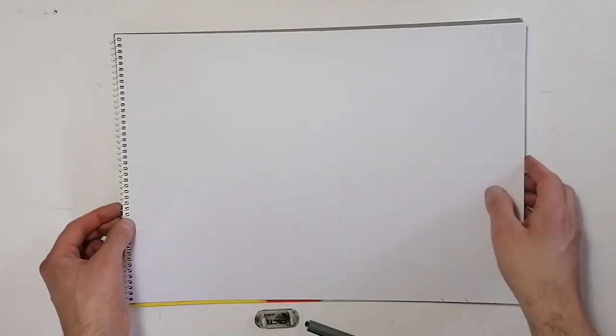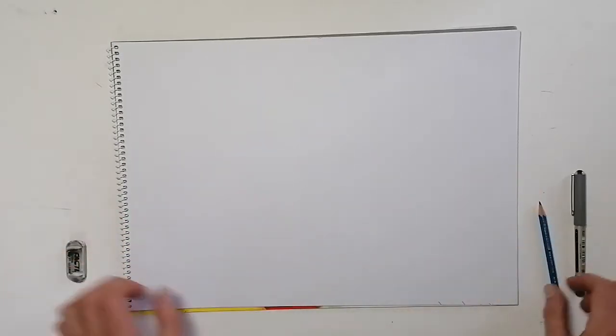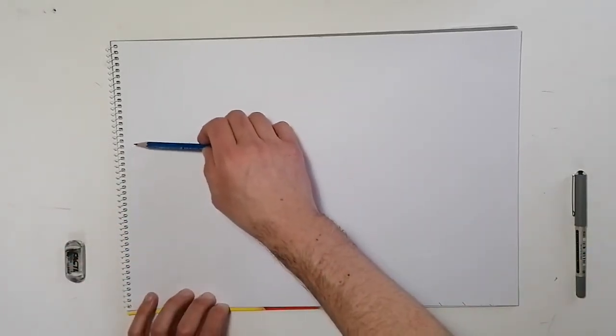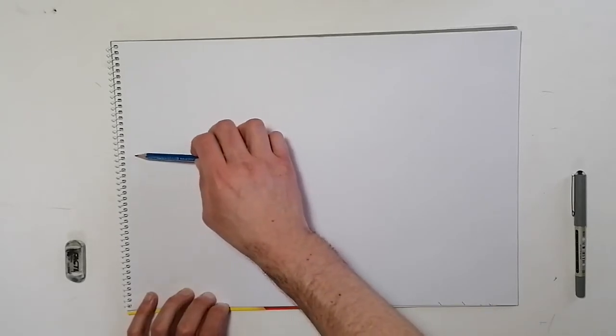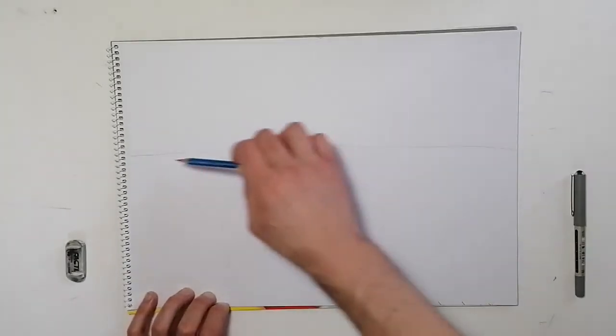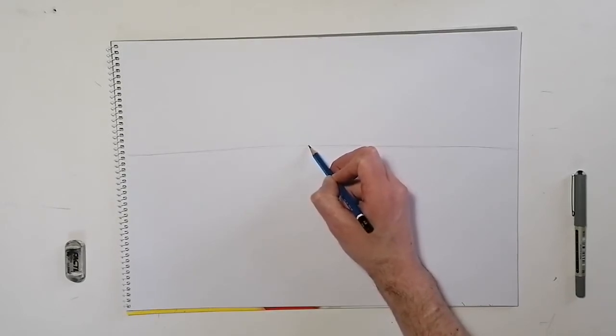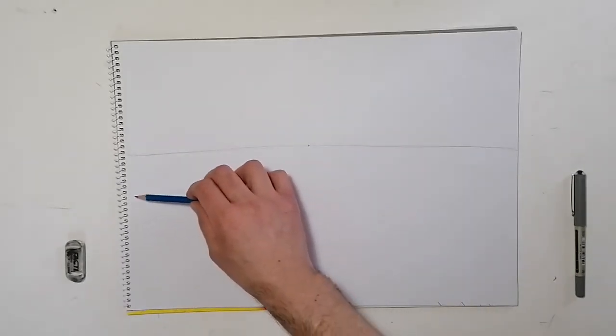I'm going to be using an A3 sheet of paper — you can use an A4 or whatever you can get your hands on. We're going to start just above the halfway point along the page: draw a horizon line from left to right. You can use a ruler or a straight edge if you want. I'm not going to use one. Then pick a dot in the center — that's the vanishing point.